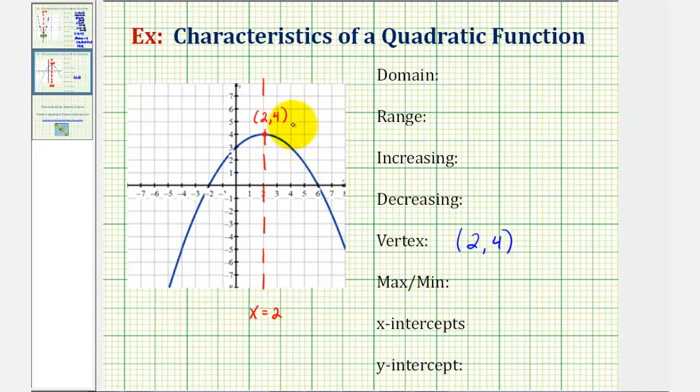And now that we've already found the vertex, let's find the maximum or minimum function value. Again, because this is a high point, the maximum value occurs at this point. The maximum value would be the y-coordinate of the vertex. So we have a maximum of four, and we would say it occurs at x equals two. So the location is the x value, and the maximum value is the y value.